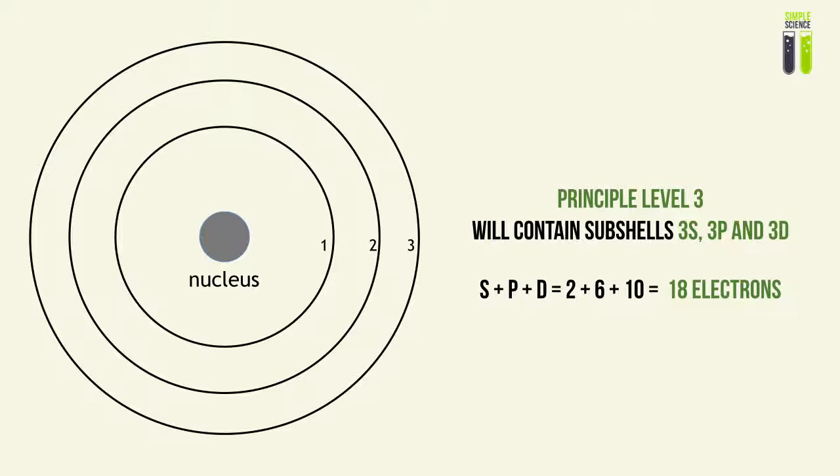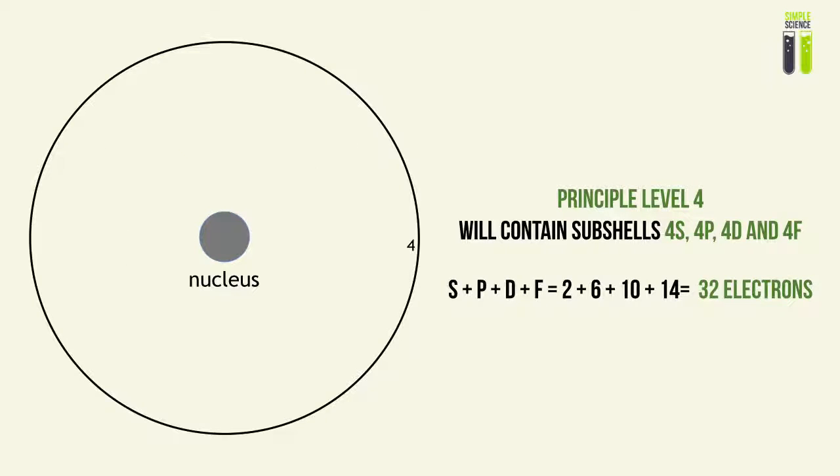Principal energy level 3 will contain three subshells: S, P, and D, labelled 3S, 3P, and 3D. Summing up the electrons from S, P, and D gives 2 plus 6 plus 10, which equals 18 electrons — exactly the limit for this level. Similarly, principal energy level 4 introduces the F subshell, so it has all four types: S, P, D, and F, labelled 4S, 4P, 4D, and 4F.